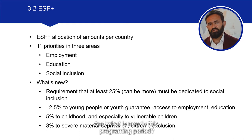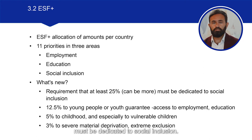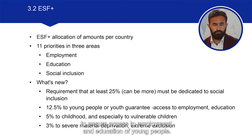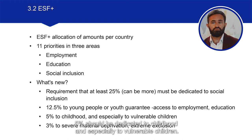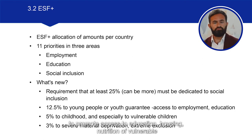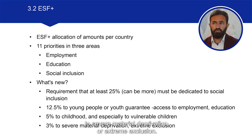What is new in this programming period? The requirement that at least 25% — and it can actually be more — must be dedicated to social inclusion. In addition, 12.5% should be dedicated to young people, or to the youth guarantee, to ensure access to employment and education for young people. 5% should be dedicated to childhood and especially to vulnerable children, in line with the child guarantee to promote access to education, housing, and nutrition of vulnerable children. And 3% must be dedicated to severe material deprivation or extreme exclusion.